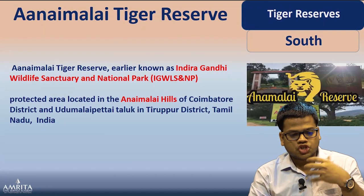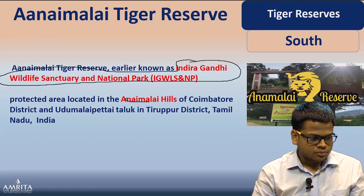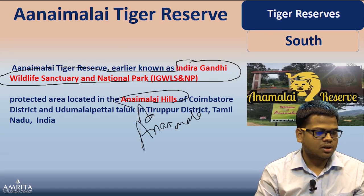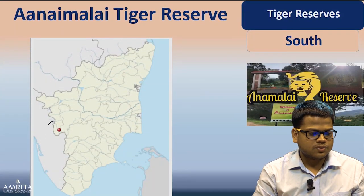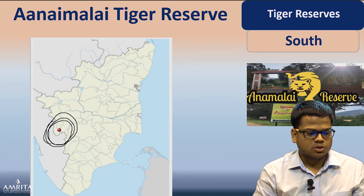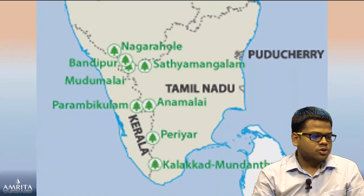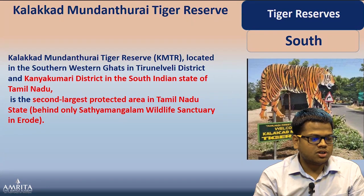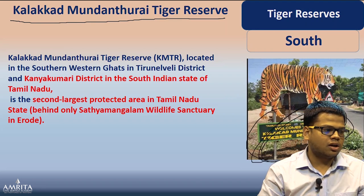Anamalai Tiger Reserve, earlier known as Indira Gandhi Wildlife Sanctuary and National Park, is located in the Anamalai Hills. Parambikulam Tiger Reserve and Anamalai Tiger Reserve are very close to each other — Parambikulam is in Kerala while Anamalai is in Tamil Nadu. Remember the relative position: Parambikulam to the west and Anamalai to its east in the Anamalai Hills area.